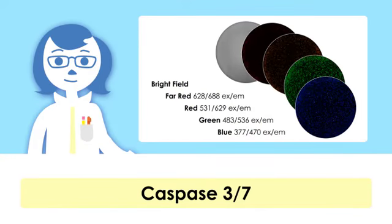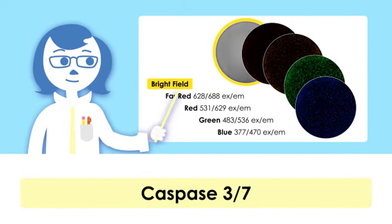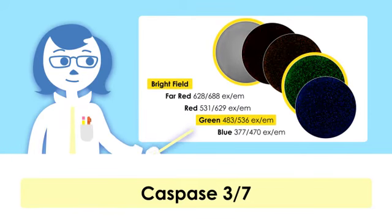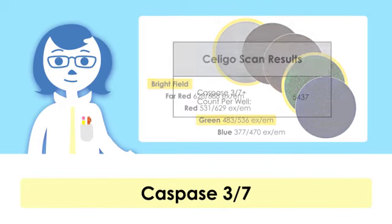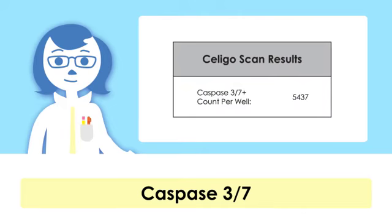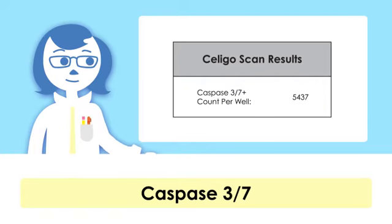After staining, the Saligo was used to acquire whole well brightfield and caspase-3-7 green images. The Saligo software automatically analyzes the captured images and reports the total number of green caspase-positive cells in the entire well.